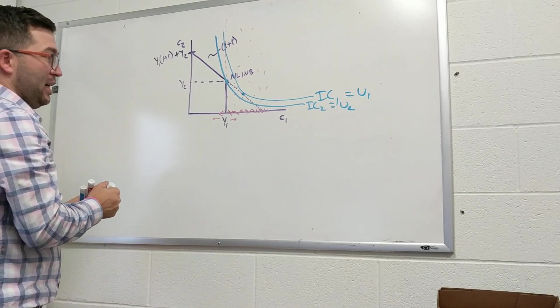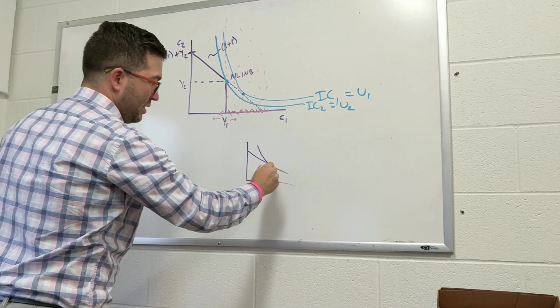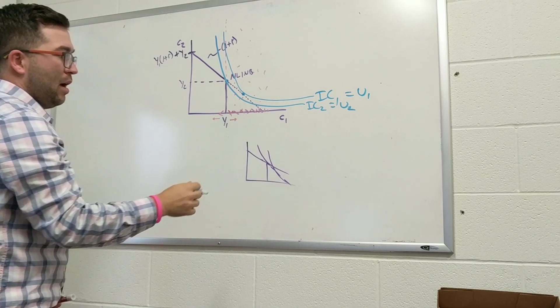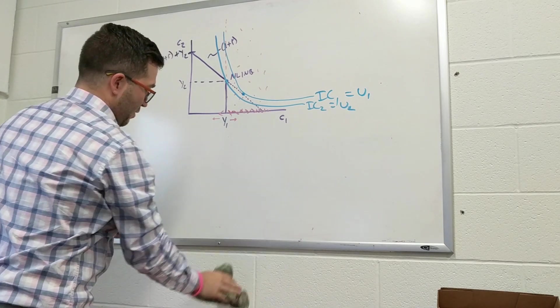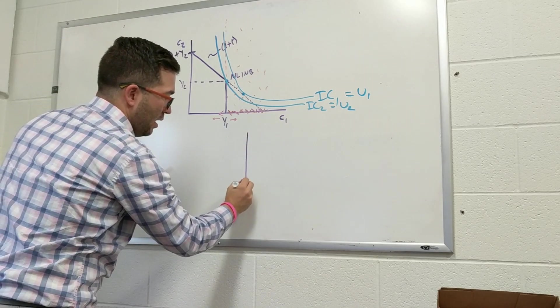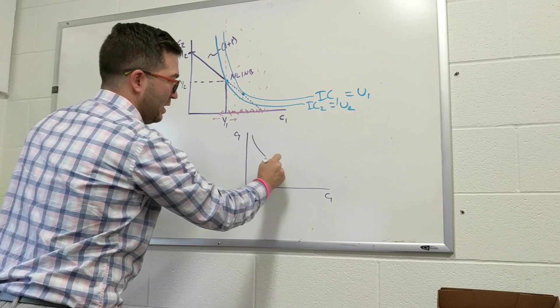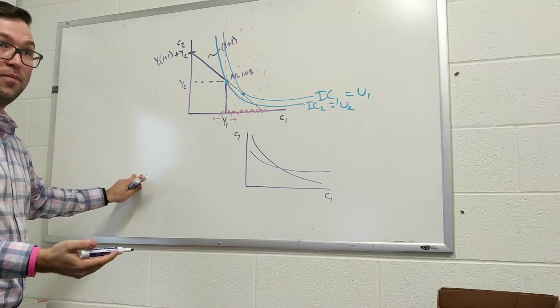And I know one of the other questions that was asked was, what if I drew it this way, where it looks something like this, but you can't have indifference curves cross. And the reason why you can't have indifference curves cross, if I were to draw this, this is any two goods. We can just do C1 and C2, and let's say there's an indifference curve that looks like this, and then there's an indifference curve that looks like this, so they cross, okay?